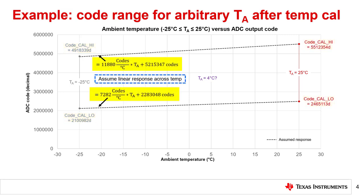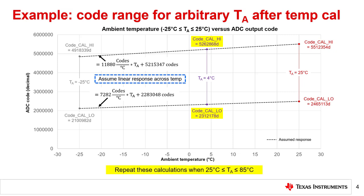Next, using the assumption that the transfer function has a linear relationship with respect to temperature, calculate the equation for the line connecting code cal high and code cal low for each calibrated temperature as shown. Finally, use these equations to calculate the transfer function's code range at any ambient temperature between the calibrated values. Using the values provided, code cal high and code cal low at 4 degrees Celsius are shown on the plot in purple. Note that this process would need to be repeated for any additional sets of adjacent calibration codes, which would be 25 and 85 degrees Celsius in this example.